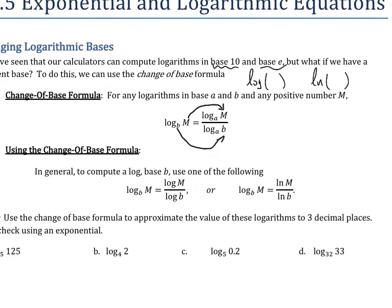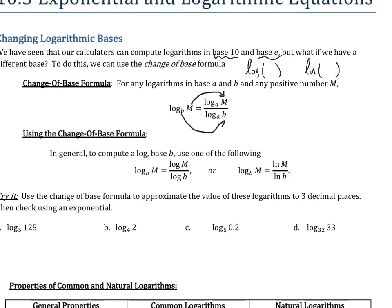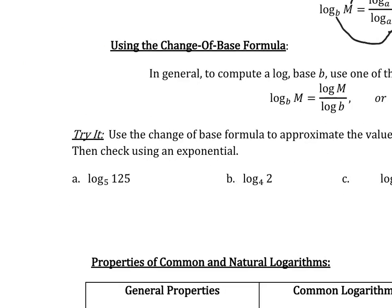What that means is that if we have some log of a base that we're not familiar with or we can't use, then we can change it to a common log like this, the log of m, the number inside, over the log of b. These are common logs, and your calculator can handle this. Or we can use a natural log of m over natural log of b.